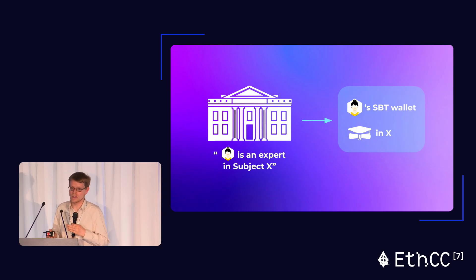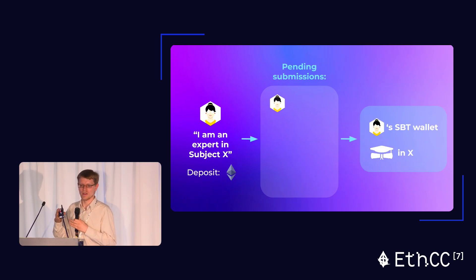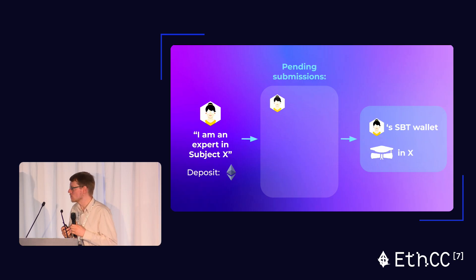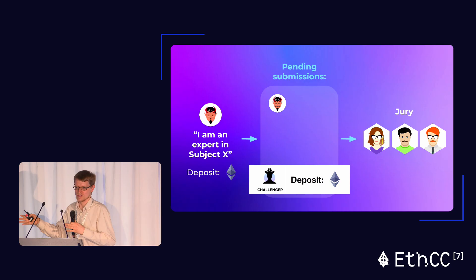How are Soulbound Tokens attributed? They can be attributed by an entity — you finish the TE Academy course and they give you a Soulbound Token. Another idea is that you could submit yourself to a curated list. With Kleros, we have curated lists arbitrated by Kleros, where if there's a dispute about whether something belongs on the list, Kleros makes the ruling. So a user might say: I want the Solidity Developer Expert Soulbound Token, I'll provide my portfolio and past work, submit myself to the list with a deposit. If no one challenges her, she gets her Soulbound Token. If someone tries to claim expertise they don't have, they can be challenged and Kleros judges whether they belong on the list.